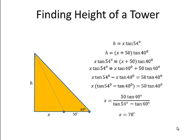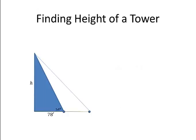If I take that 78 feet for X, if we go back to our original triangle, then I can use the tangent of 54 degrees is equal to height over that new distance we just found of 78 feet. Solving for H gives us a height of 107 feet.